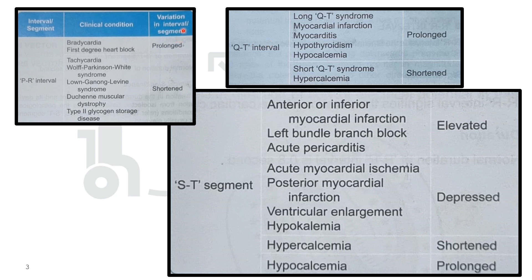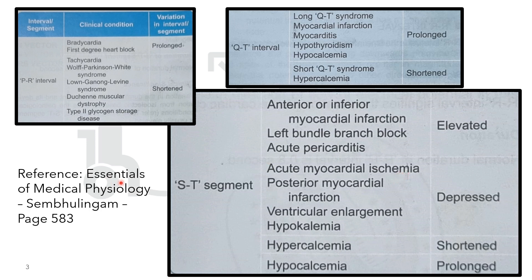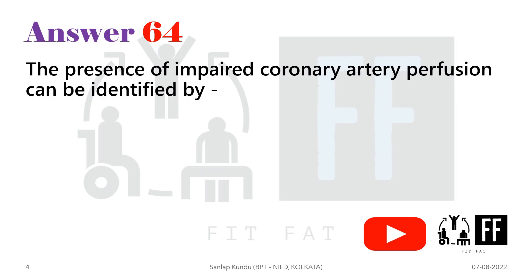The conditions depend on variations in those intervals or segments. For the ST segment: if it is elevated, there is anterior or inferior myocardial infarction; if it is depressed, there is acute myocardial ischemia. You can see all of that in the Medical Physiology Sembulingham book, page number 583.